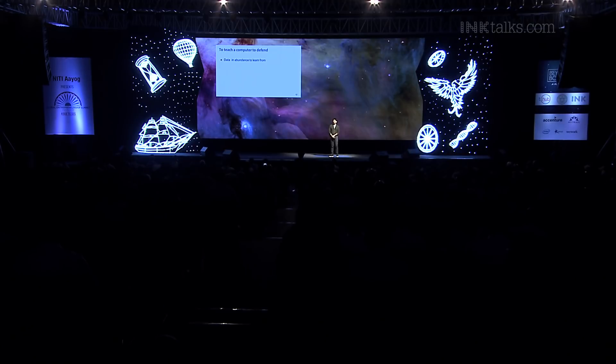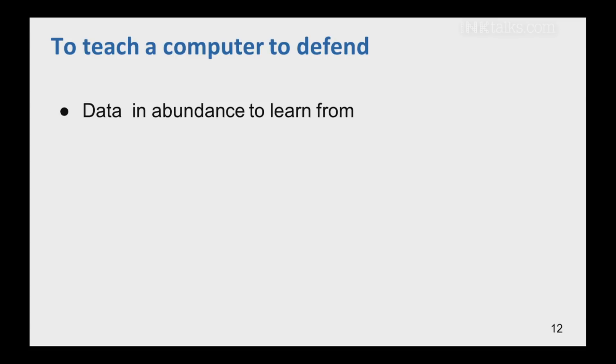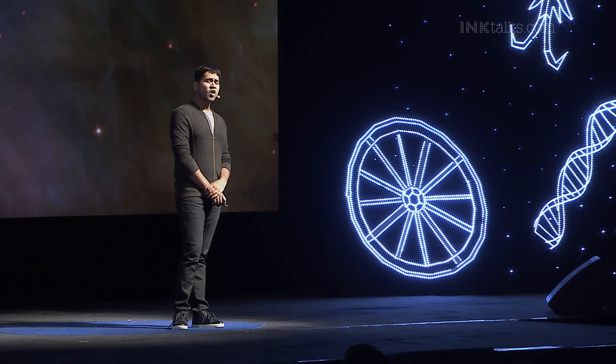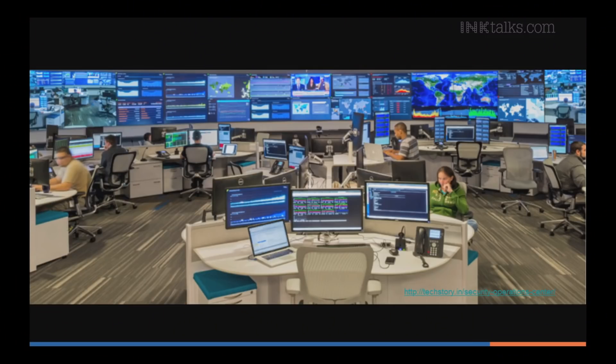Let's go one by one. First, I expected a lot of historical, tagged data — historical examples of attacks. It turns out, in most enterprises, that data does not exist. Then I thought, if data does exist, can we get humans to tag it — whether something is an attack or not? It turns out that's not easy. For images, everyone can tell what's in them. But for this kind of data, you require security experts sitting in a command-and-control center, analyzing the data to determine whether it's an attack and tagging it.